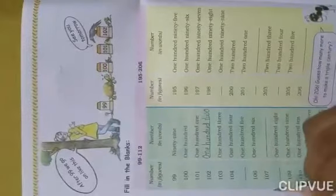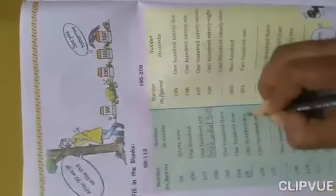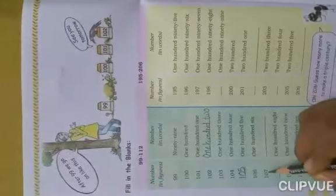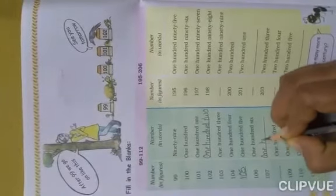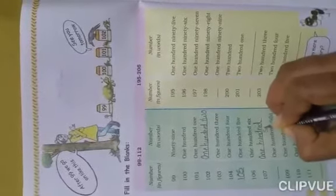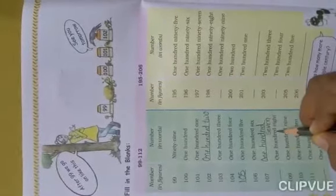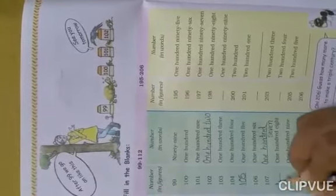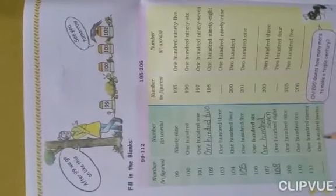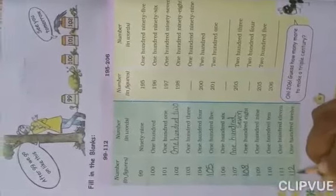Don't write congested — you have to read it. 108: number name — 100 place we write 1, tens place kuch bhi nahi diya hai toh 0 likh denge, aur ones place pe likhenge 8. 109, 110, 111. Now for 112: on hundreds place we write 1, and 12 we write 1 and 2 — it is the number 112.